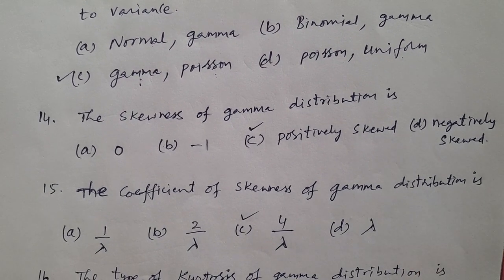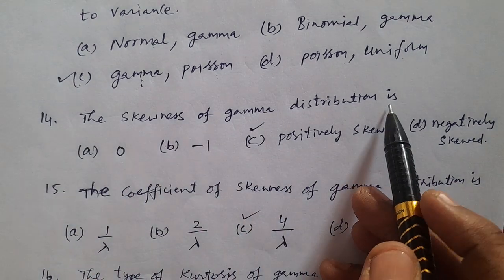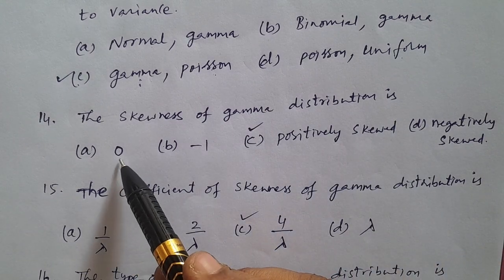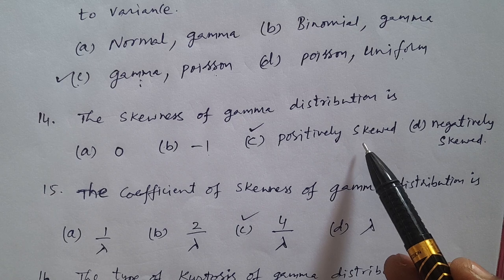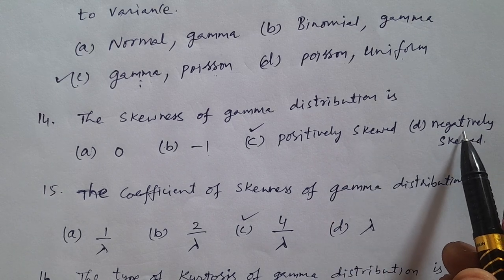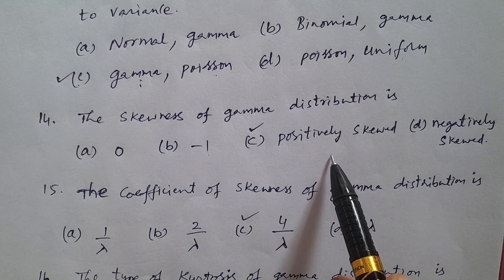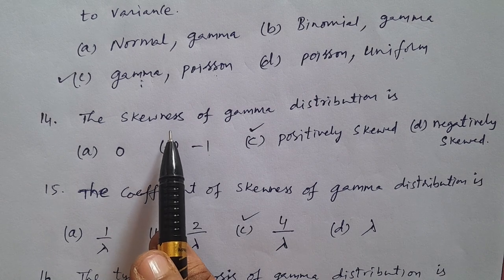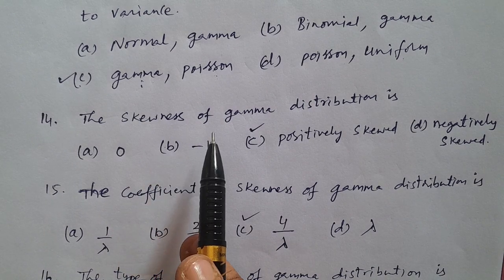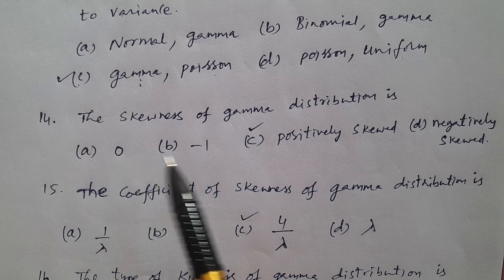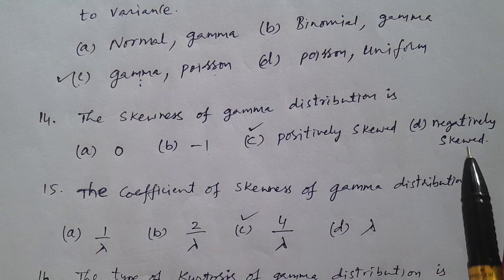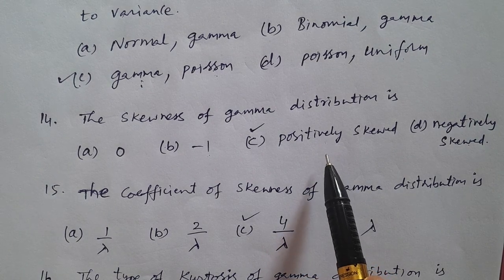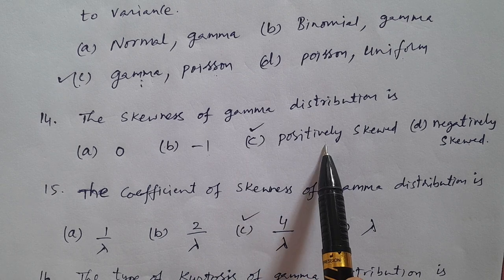Question 14: What is the skewness of gamma distribution? Options: A) 0, B) minus 1, C) Positively skewed, D) Negatively skewed. The answer is C — positively skewed. Gamma distribution is a positively skewed distribution.